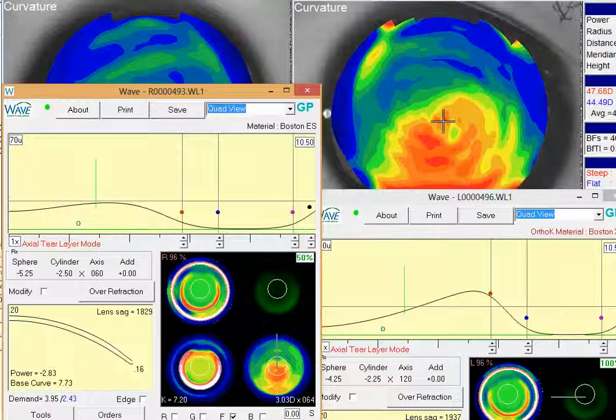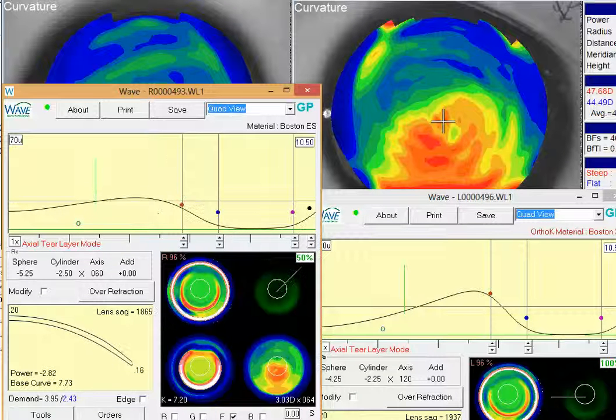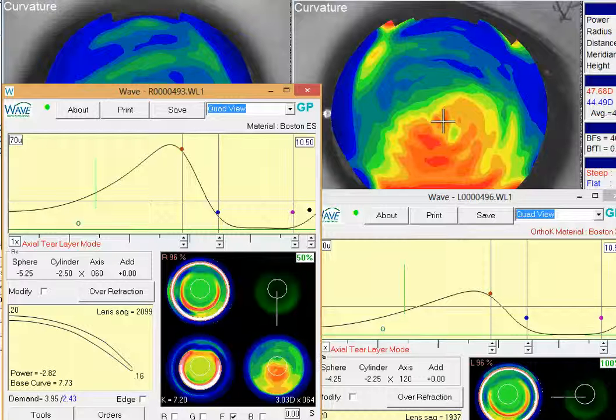Maybe even click up on the blue a little bit to get a little more tear flow. So that might be a simple way to try to take this lens and just tweak it a little bit to see if you can get a little bit better comfort later in the day.